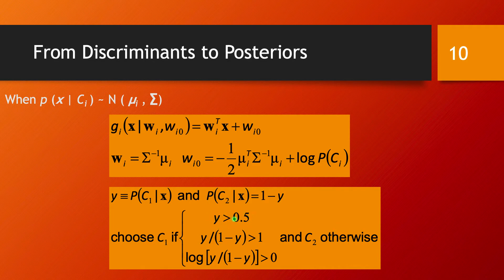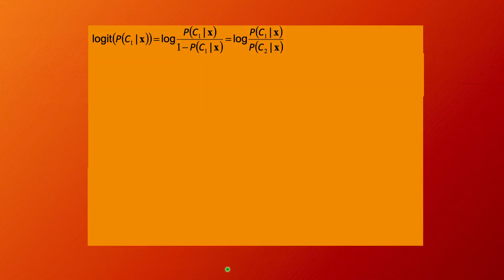The same classification condition can be stated as: y over (1 minus y) is larger than 1. I'm going to explain in a moment why I'm tweaking this simple condition. Equivalently, we can apply the logarithm and say the logarithm of y over (1 minus y) is larger than 0. I want to focus on this last formulation, which is the so-called logit transformation applied to the probability of class C1 for data point x.